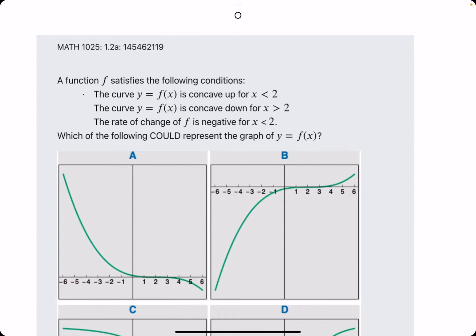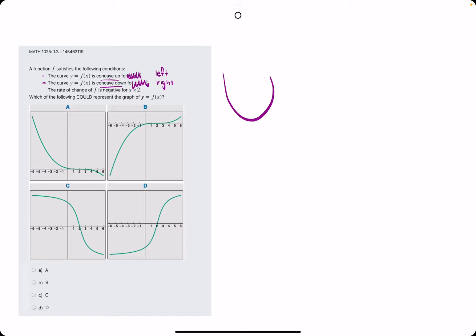In this problem, we start with the first two statements, and we can ignore these inequalities at the end, because these first two statements are really just describing how the function is changing from left to right. It'll start concave up and change to concave down.